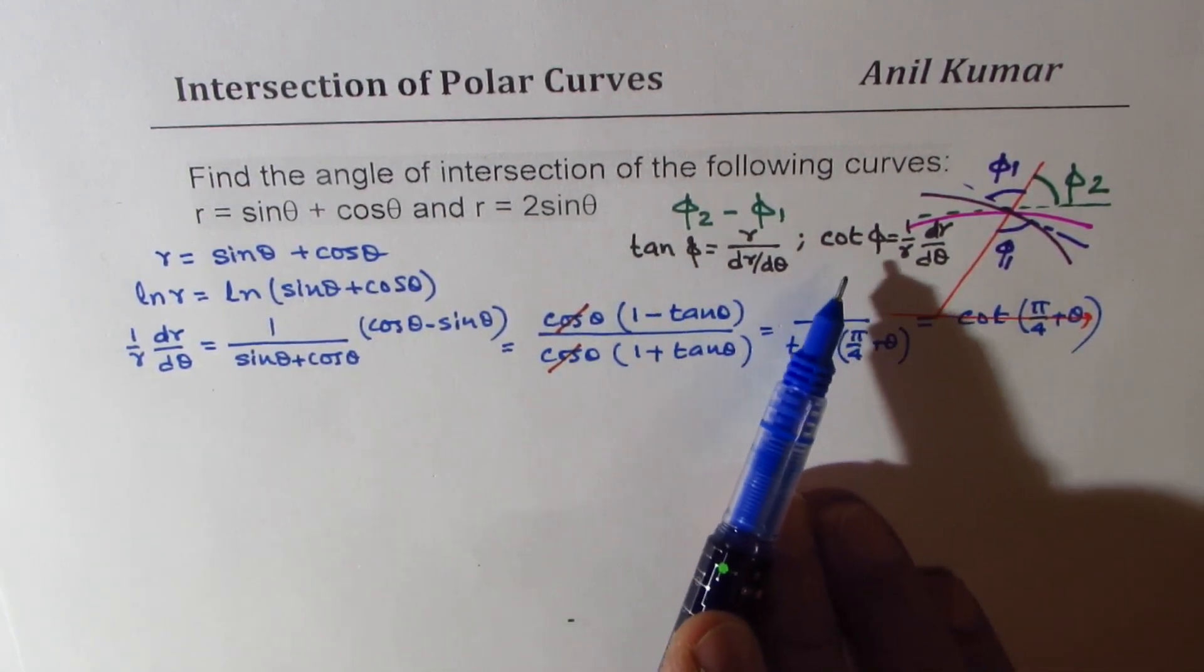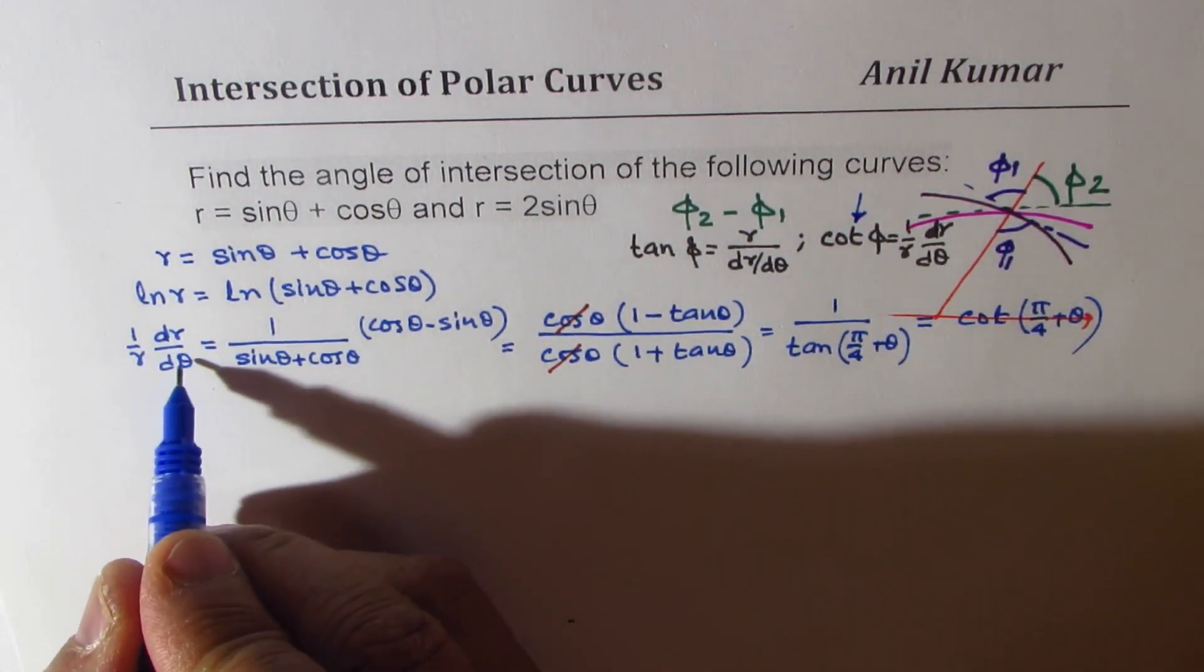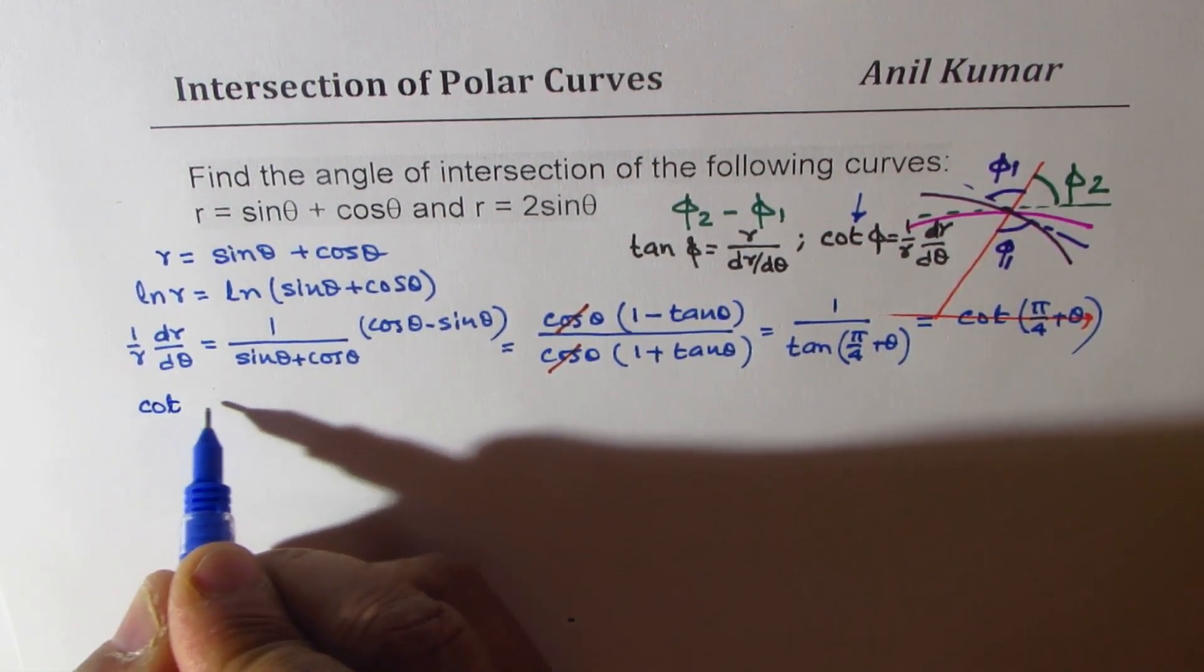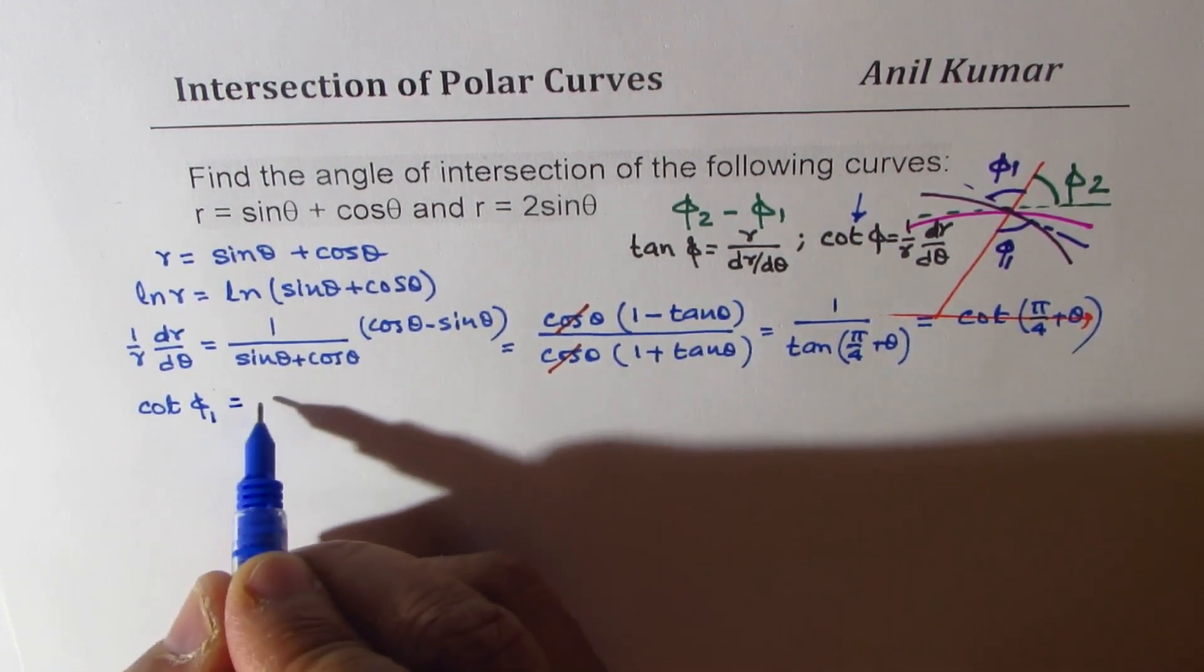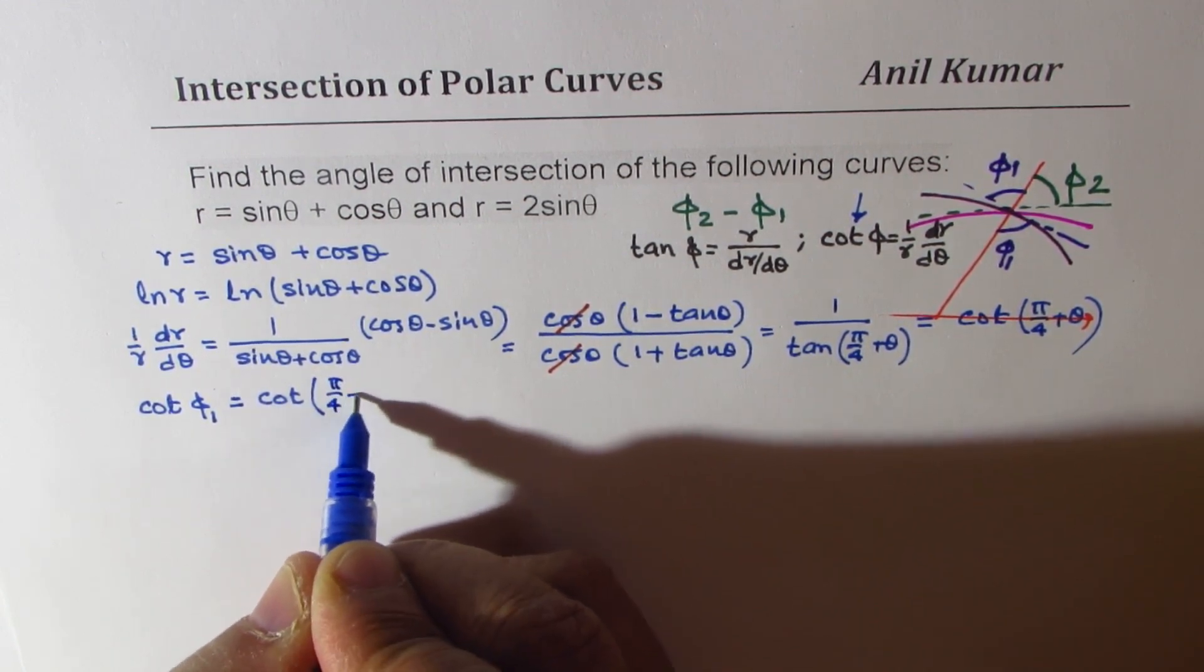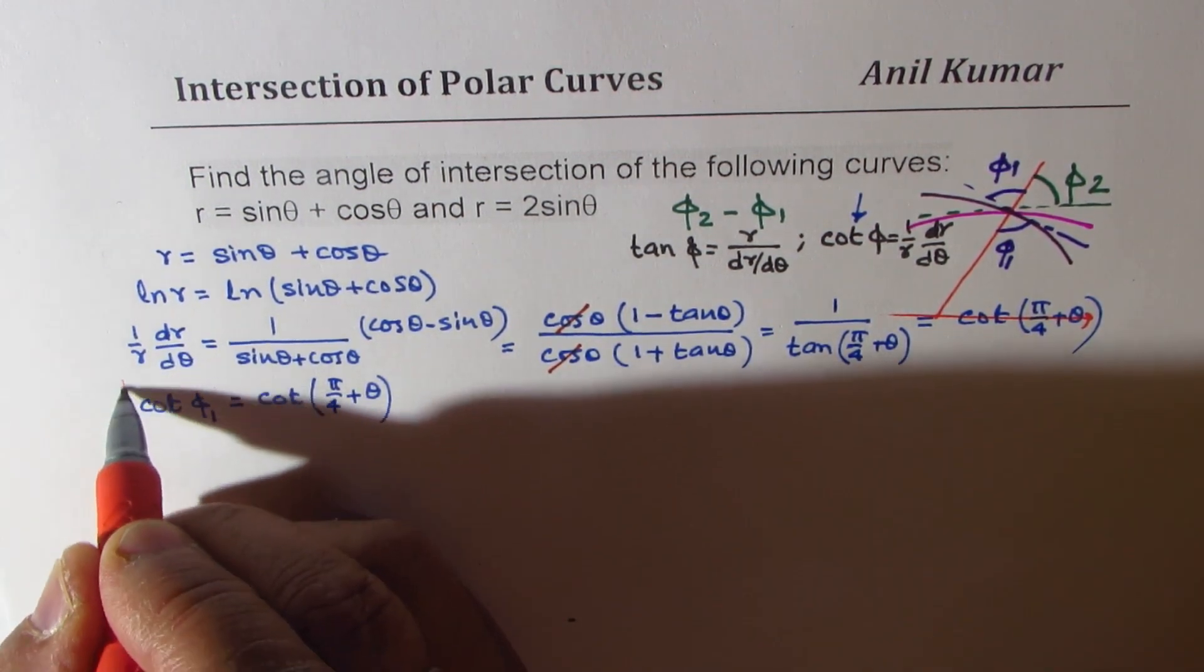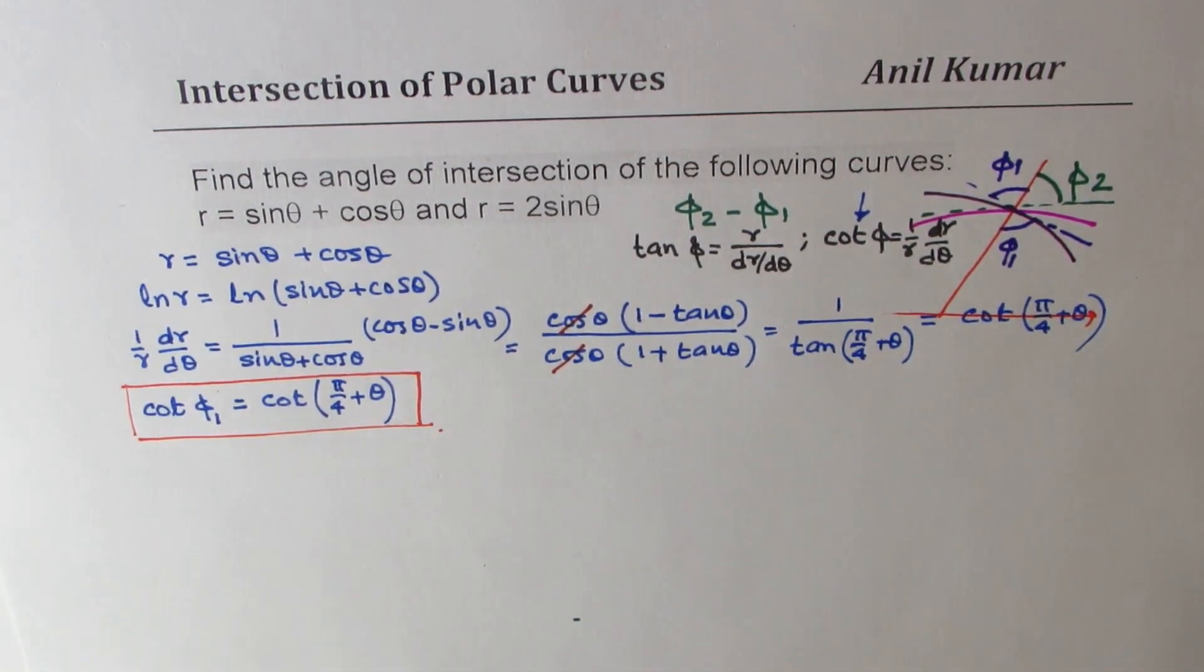Now, comparing with our angle formula, what we really get here is 1 over r dr d theta is cot phi 1 equals cot pi by 4 plus theta. So we get the first angle, so let me just highlight this one.